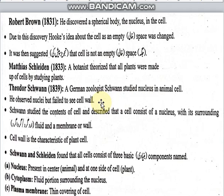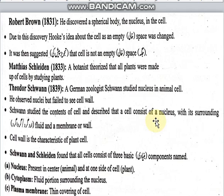Theodore Schwann studied nuclei in animal cells. He observed nuclei but failed to see cell walls. Schwann described that a cell consists of a nucleus surrounded by fluid and a wall. The cell wall is a characteristic specific to plant cells.